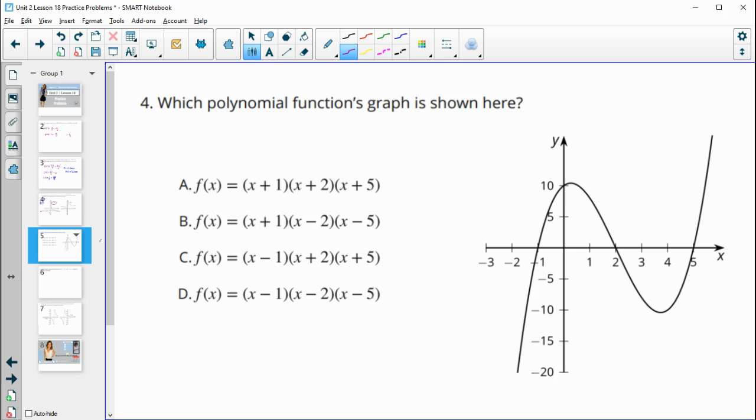Number four, which polynomial function's graph is shown here? So this one we can kind of see with the zeros. So let's take a look at each of these zeros. So this has a zero of negative 1, a zero of positive 2, and a zero of 5.